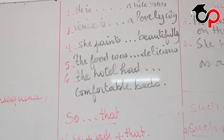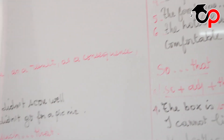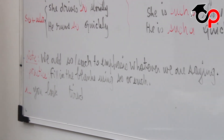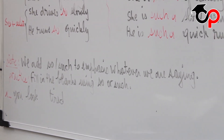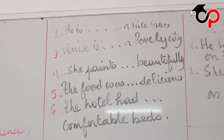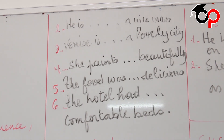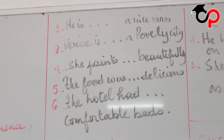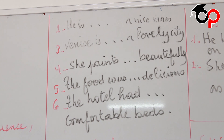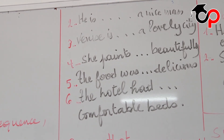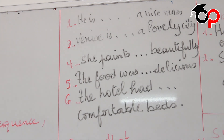Let's correct. Sentence 1: you look tired — tired is an adjective, so we put so. You look so tired. Sentence 2: he is a nice man — a nice man is a noun phrase made up of a plus adjective plus noun. So we put such: he is such a nice man. Sentence 3: Venice is a lovely city — a lovely city is a noun phrase, so we put such: Venice is such a lovely city.